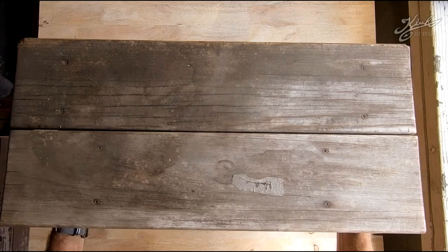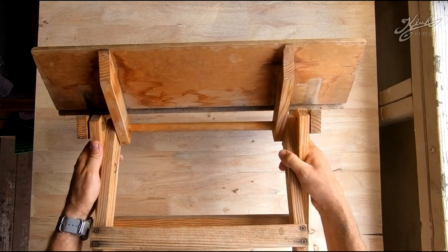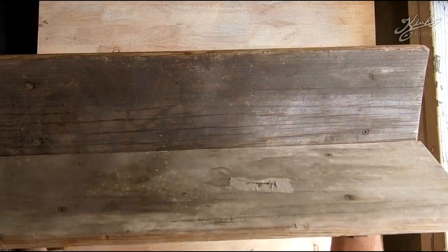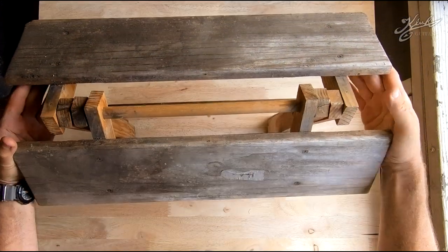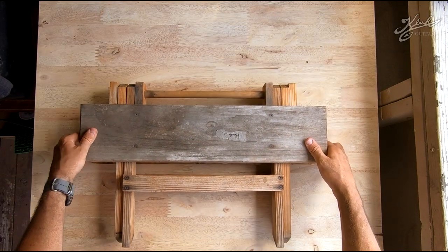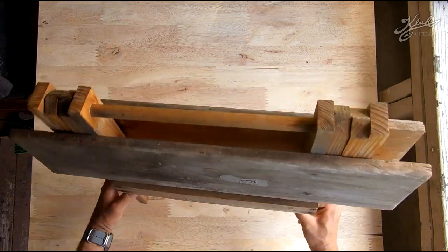So here we have an interesting project. This is an old folding table made by my girlfriend Heather's uncle Bartley, and it's a pretty cool piece of engineering woodwork here. It folds up just like that, but as you can see it's pretty weathered and beaten up.